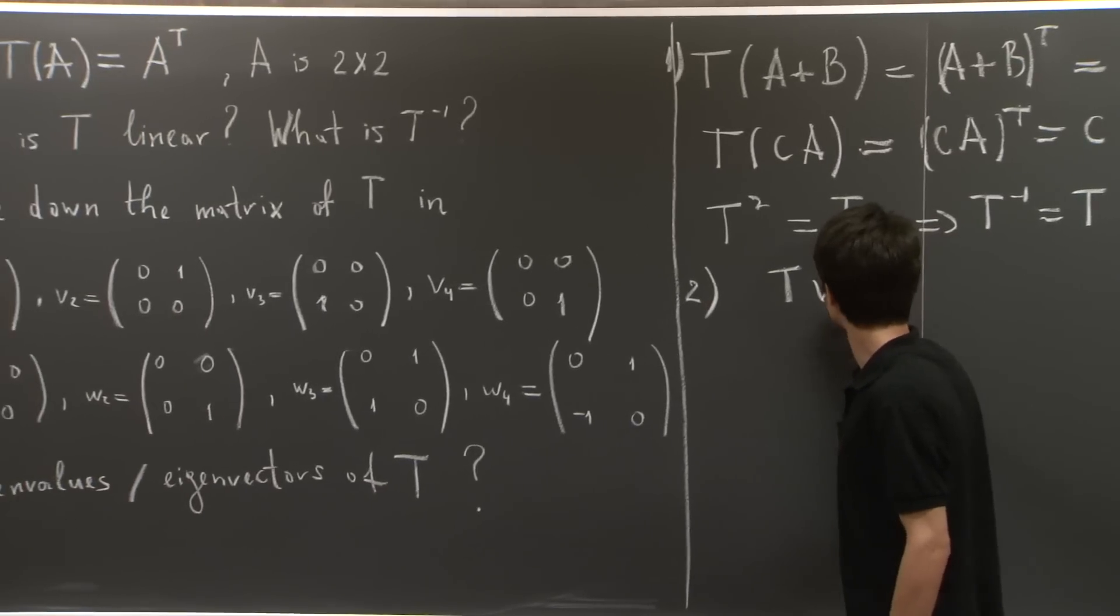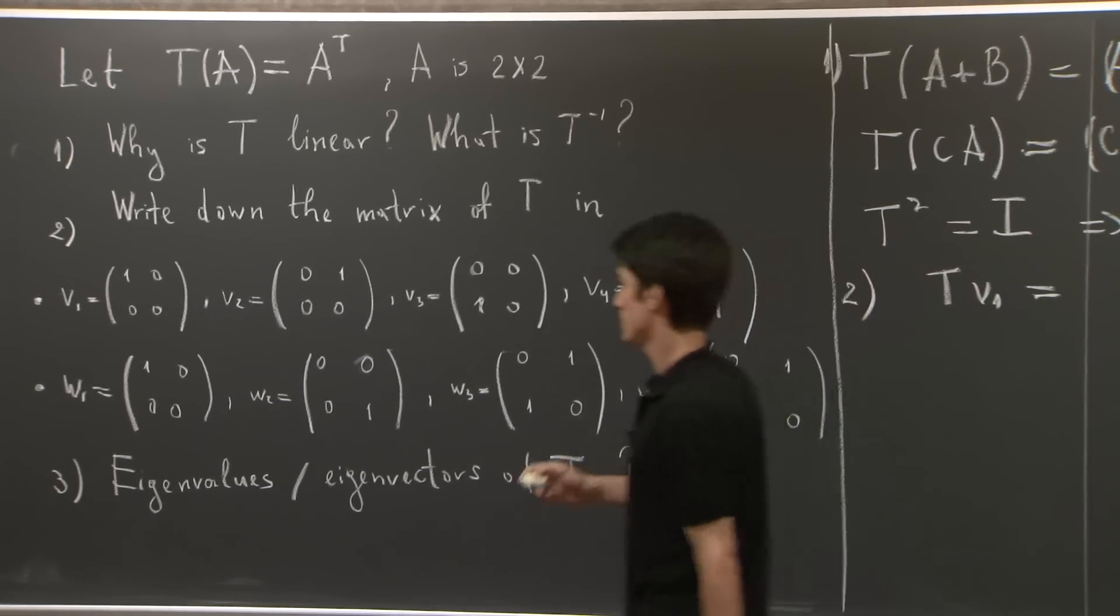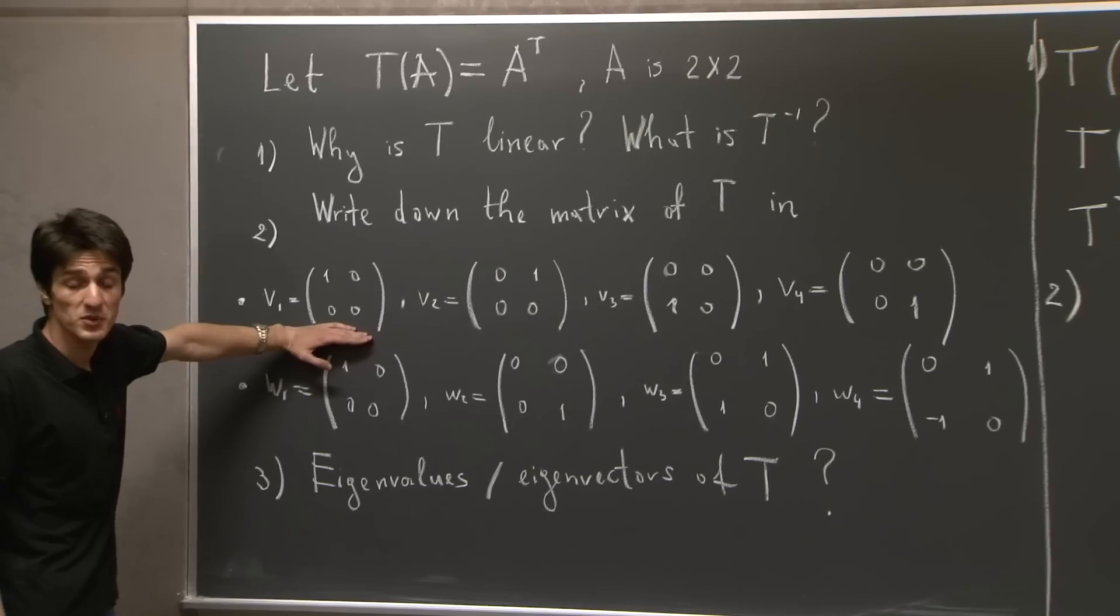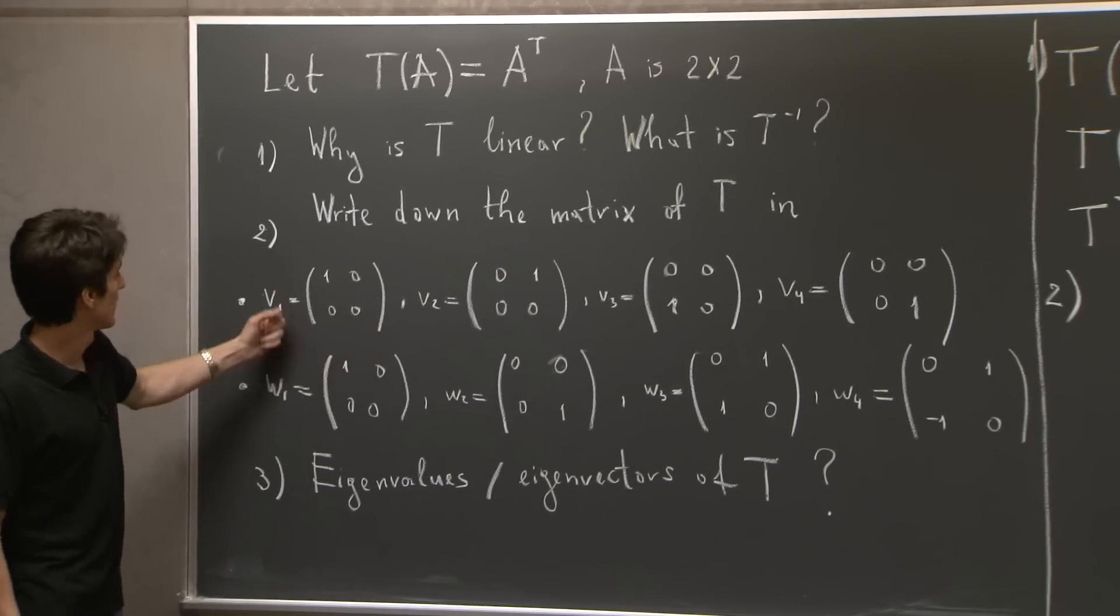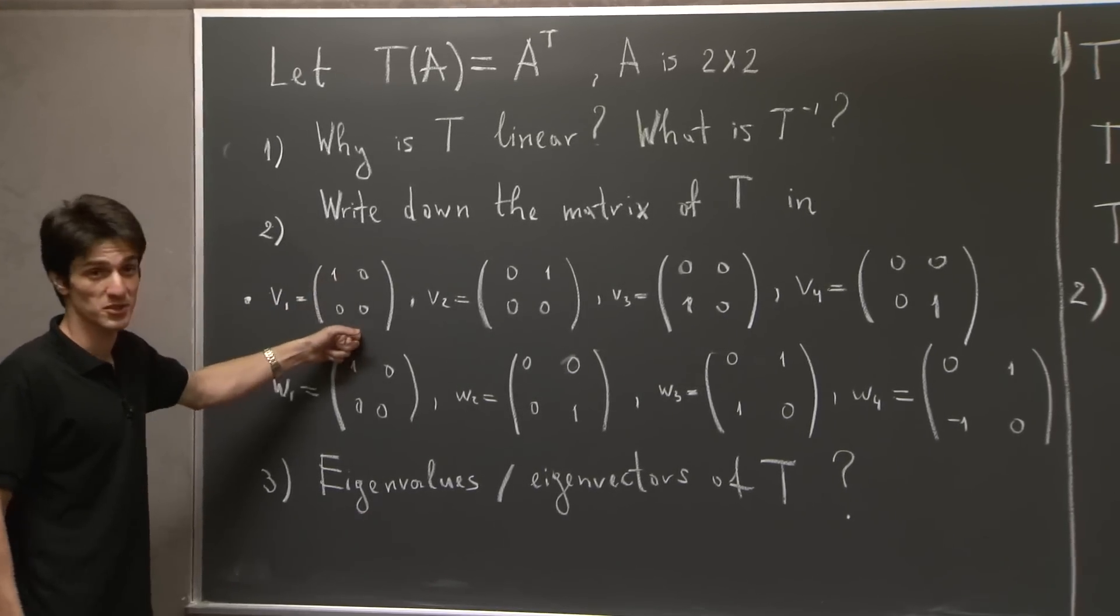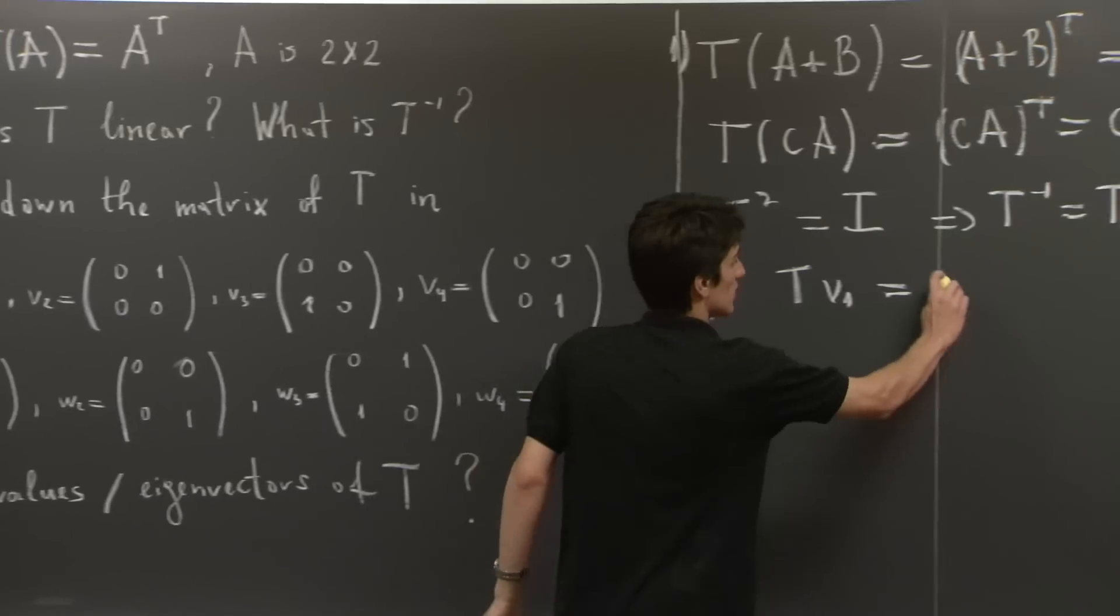So T of V1. Let's go back. So it's here. T takes the transpose of this matrix. But we see that the transpose of 1, 0, 0, 0 is 1, 0, 0, 0. So it's a symmetric matrix. So T of V1 is V1.